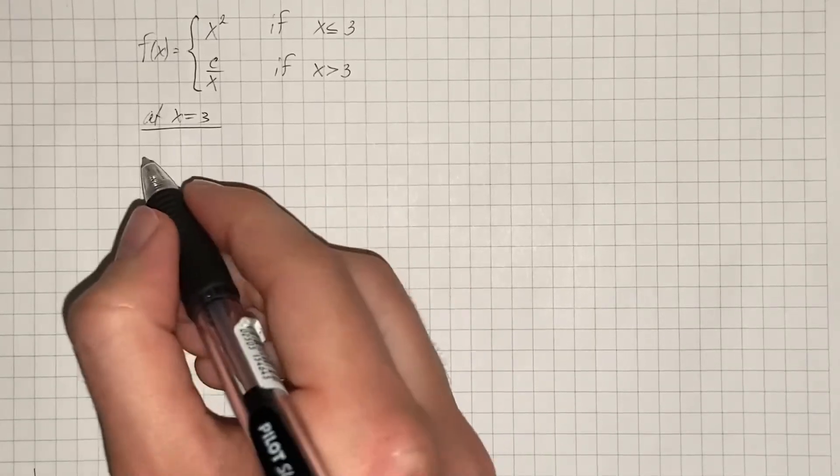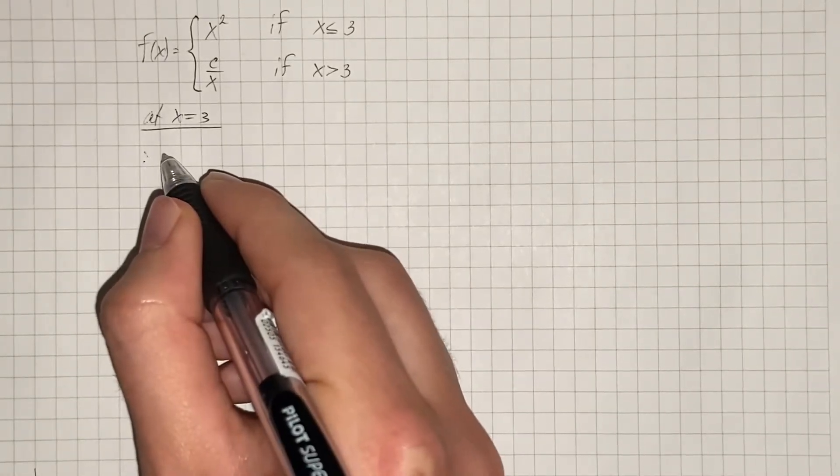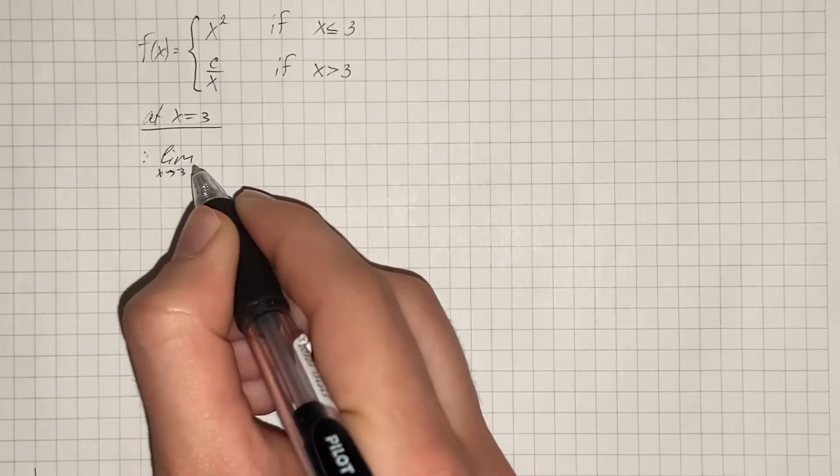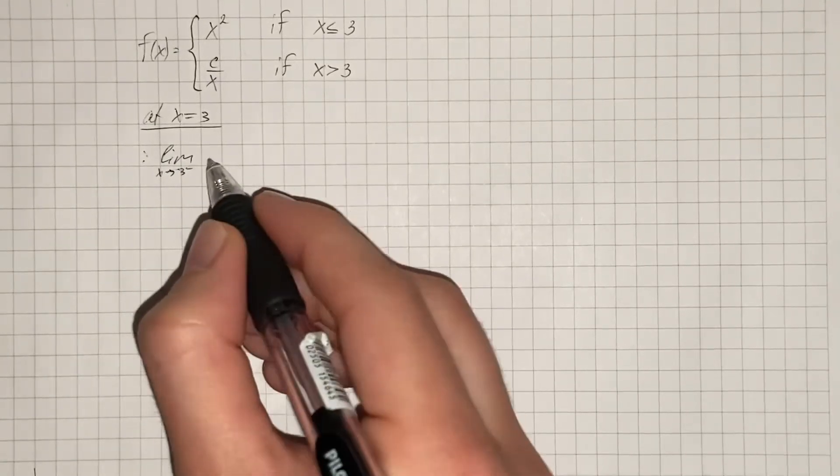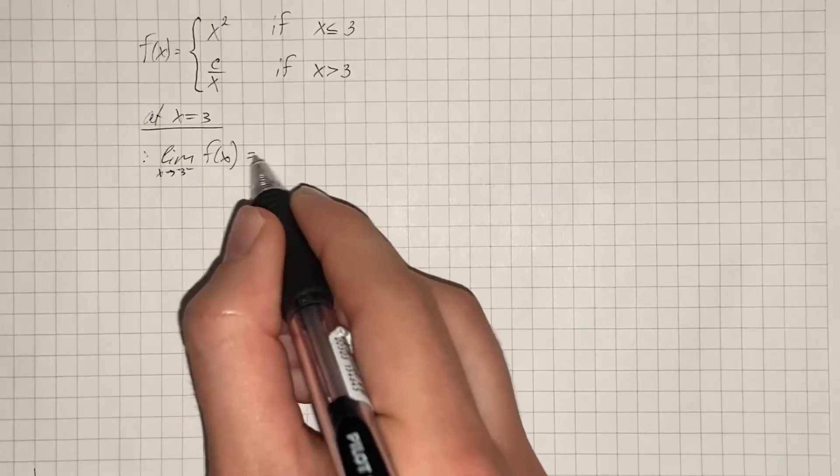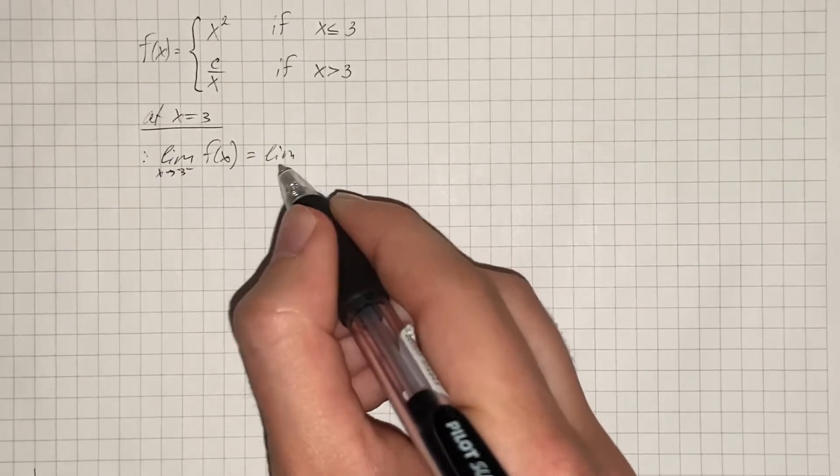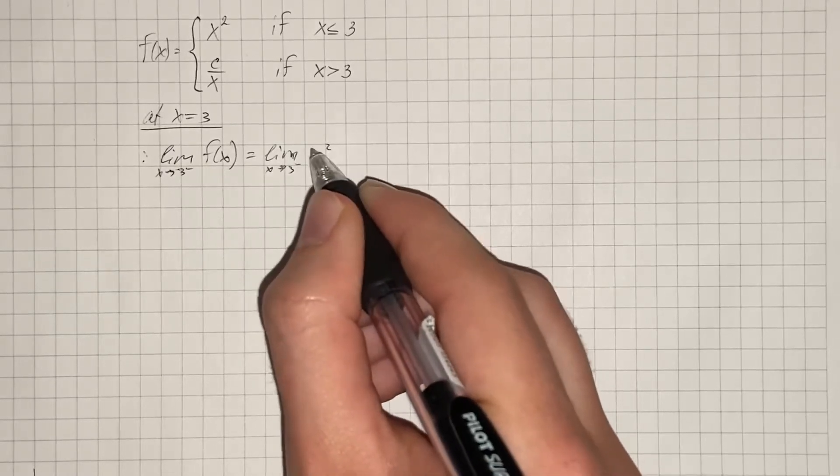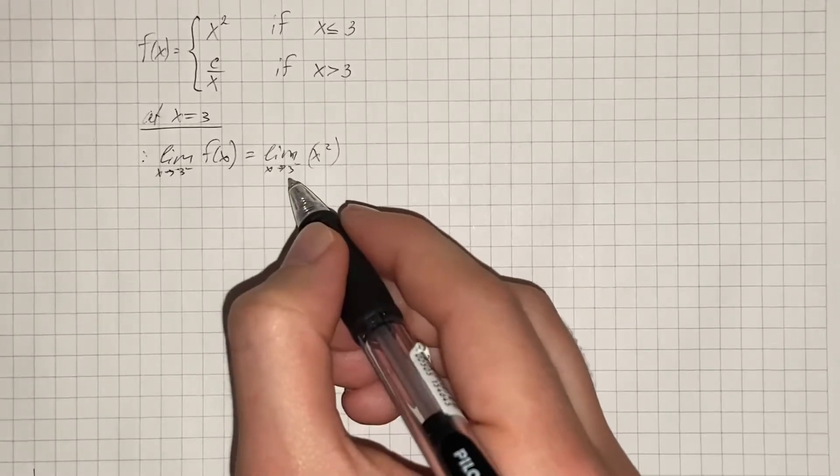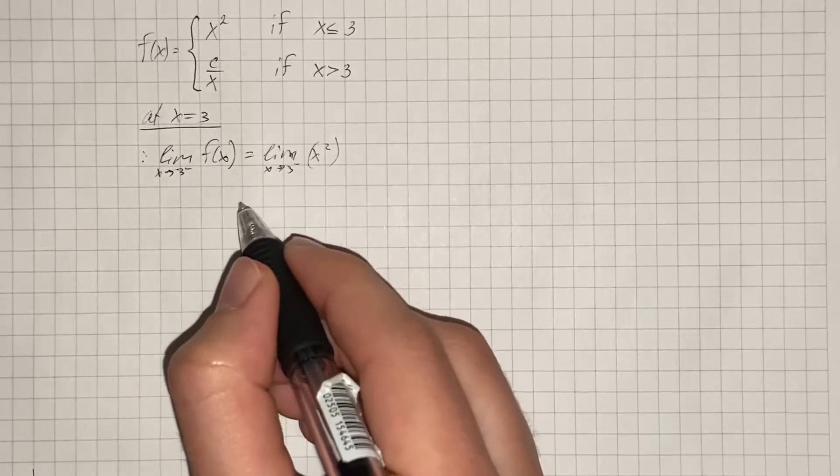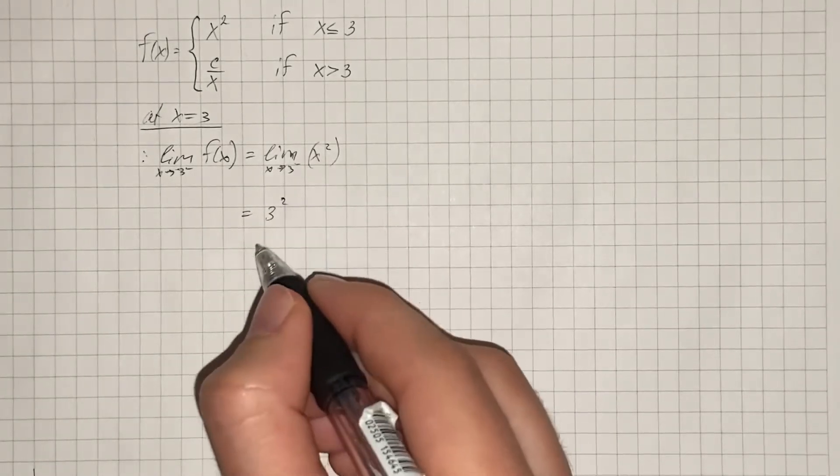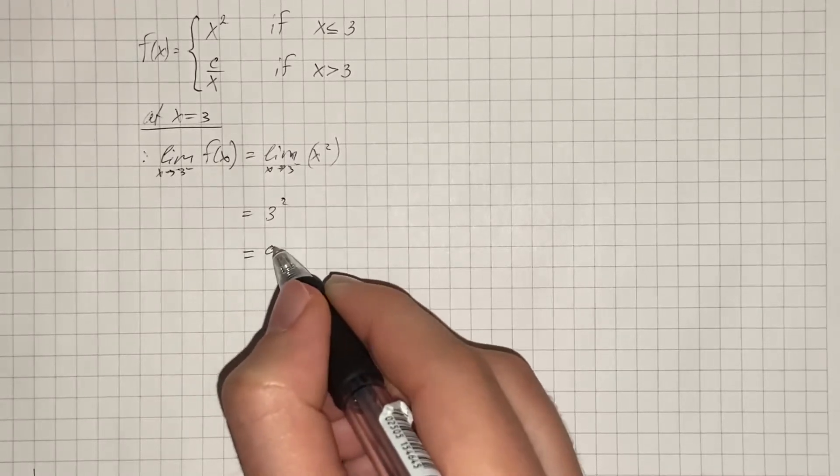We're going to find the left hand limit, that's limit as x approaches 3 from the left side, so 3 minus, of f(x). And f(x) equals x squared when x is less than 3. Now we substitute x with 3 and we get 3 squared, which is equal to 9.